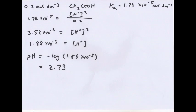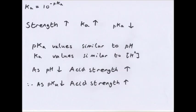Example: 0.2 mol dm⁻³ of CH₃COOH (ethanoic acid), Ka = 1.76 × 10⁻⁵ mol dm⁻³. Then Ka = [H+]² / 0.2, so [H+]² = 1.76 × 10⁻⁵ × 0.2. Take the square root to get [H+], then calculate pH = 2.73. Notice this is much less acidic than 0.2 mol dm⁻³ HCl (pH 0.7), demonstrating the difference in acid strength.